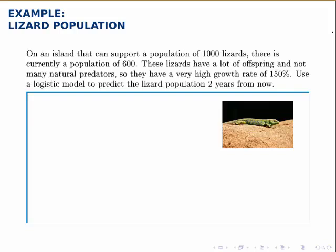These lizards have a lot of offspring and not many natural predators, so they have a very high growth rate of 150%, so we'll use 1.5 for R in the formula. We're told to use a logistic model to predict the lizard population two years from now.